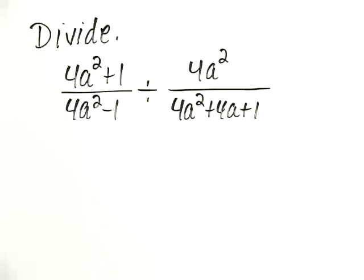Divide 4a squared plus 1 over 4a squared minus 1 divided by the quotient of 4a squared over 4a squared plus 4a plus 1.